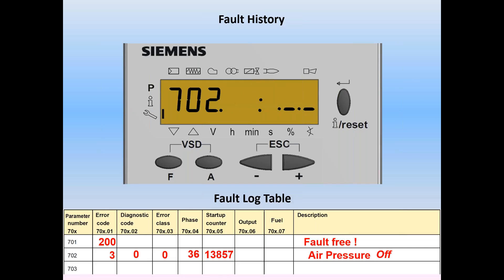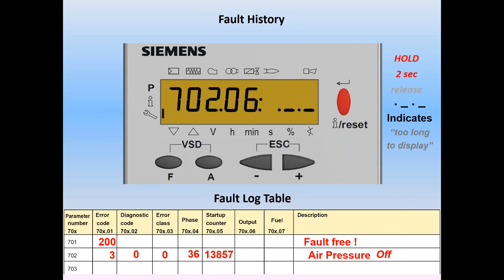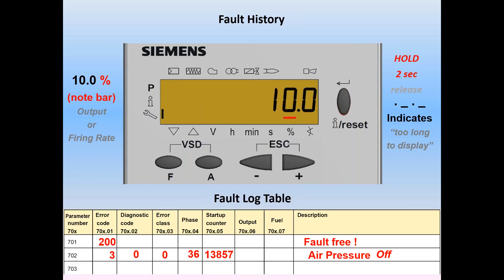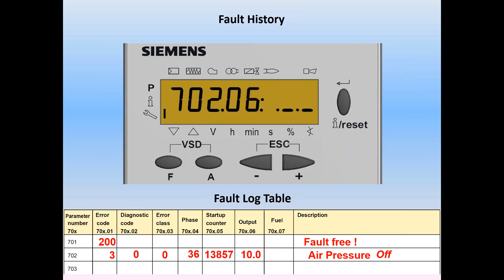Hit plus to move to index 06, which also shows dot-dash-dot-dash — the value is too big to display. Hold enter for two seconds and release. The screen shows 10, and it's 10% — the percent bar is lit up on the bottom. That tells us what units this is displayed in. We enter 10% firing rate into the bottom of the chart. Hit enter again and it returns us to index 06.